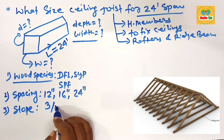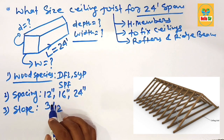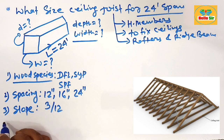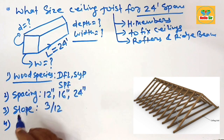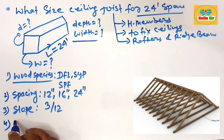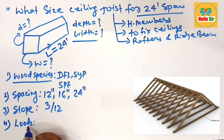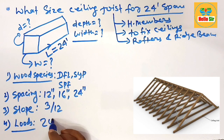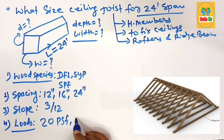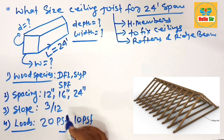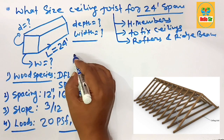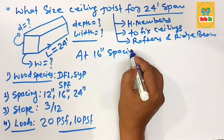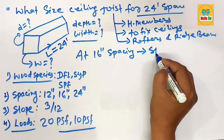The roof slope may be 3-by-12, meaning 3 inches of vertical rise for every 12 inches of horizontal run. The fourth major factor is expected load, which consists of dead load and live load — it may be 20 pounds per square foot or 10 pounds per square foot.